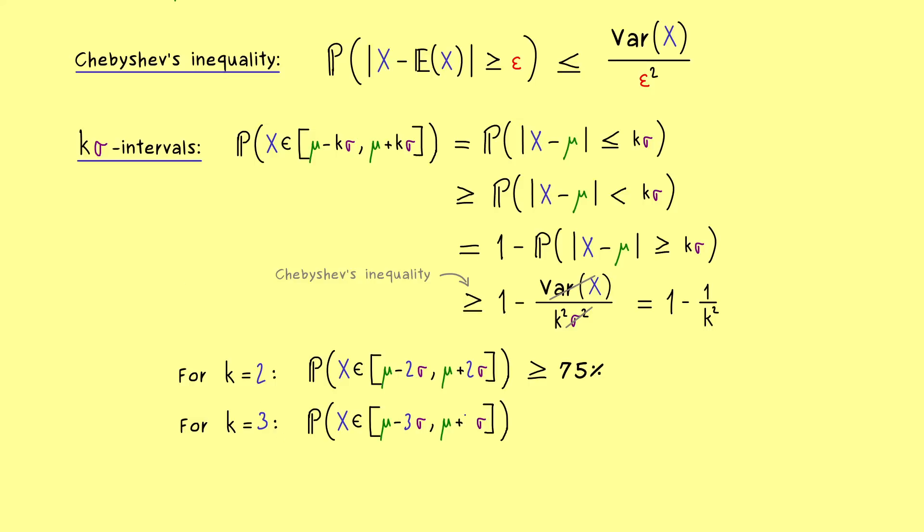And for this reason, we should also look at the important three-sigma interval. Obviously, there we get an even higher probability. It's a simple calculation: we simply have 8 over 9. And this means that more than 88% of the samples lie in the three-sigma interval.